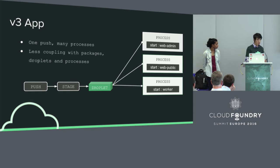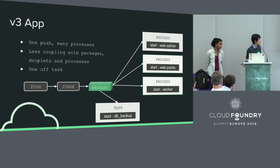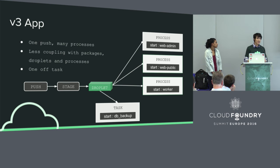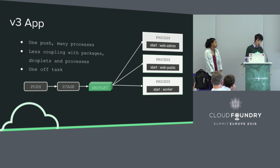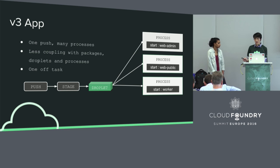Also coming out of the V3 work is a feature called one-off tasks. From a droplet, you can spawn up different process types, but at the same time you can also spawn a task. The major difference between a task and a process is that a process is long-running — if it goes down or crashes, it gets resurrected. But for a task, it runs at most once, and once the task finishes doing what it's destined to do, it goes away and returns all the resources back to the pool. This allows us to do things we couldn't do before, such as periodically collecting data from your production app, running database migrations, or backing up your database.